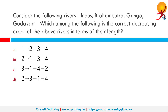Consider the following rivers: Indus, Brahmaputra, Ganga, Godavari. Which among the following is the correct decreasing order of these rivers in terms of their length? Indus is 3,180 km long, Brahmaputra is 3,848 km long, Ganga is 2,525 km long, and Godavari is 1,465 km long. In decreasing order of length: Brahmaputra, then Indus, then Ganga, and finally Godavari.